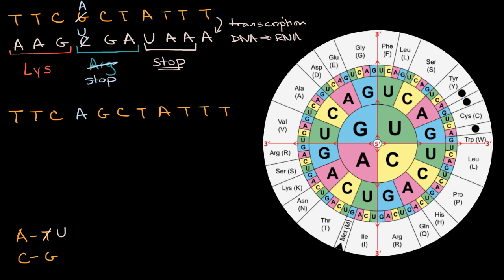Now what are we coding for? Well, when we transcribe to RNA, this will be A, A, G, U, C, G, A, U, A, A, A. And now this first codon still codes for lysine. We've seen that multiple times. But what about this second codon? The second codon over here, U, C, G. U, C, G. That's serine.